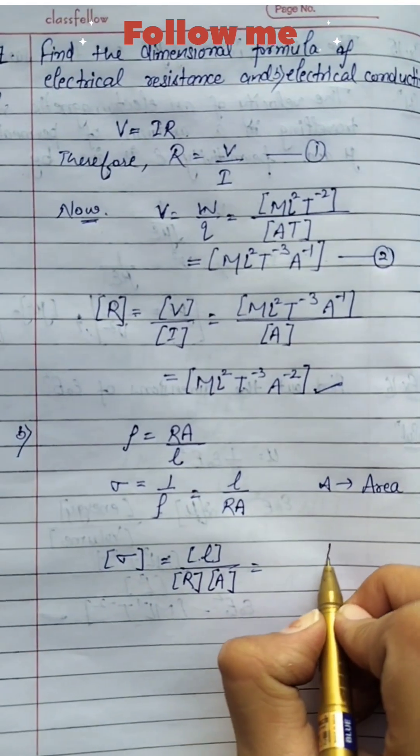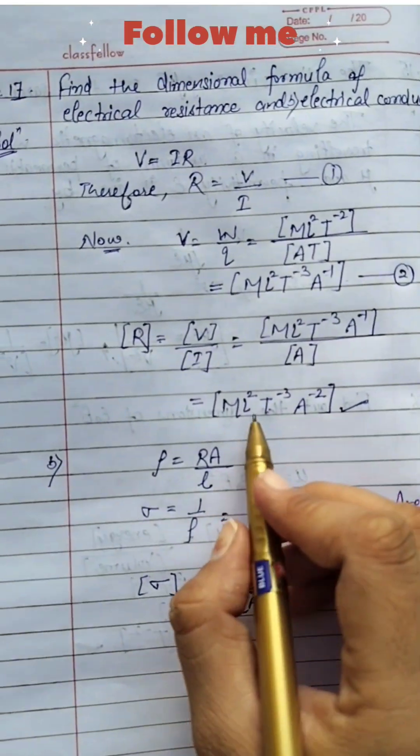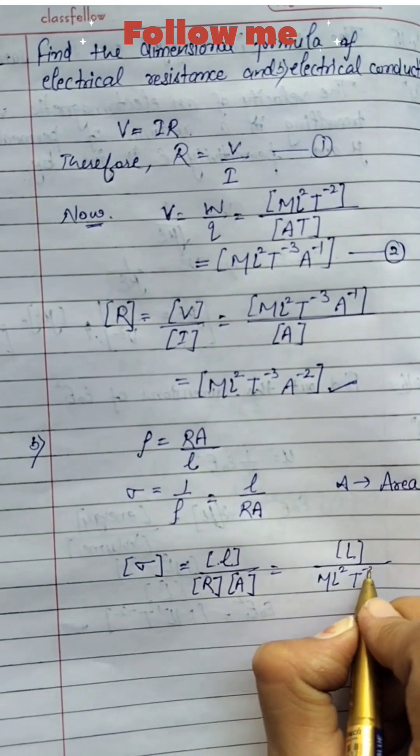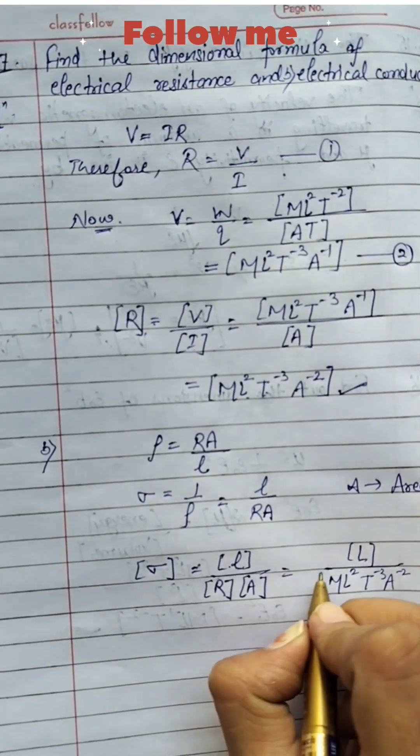We can write here L upon the value of R, which is ML² T⁻³ A⁻².